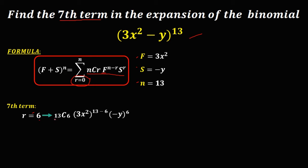Simplify using a calculator. 13 choose 6 gives us the coefficient. Distribute the exponent 7 to 3 and x squared, so this becomes 3 to the power of 7 and x squared times 7, giving x to the power of 14. For negative y to the power of 6 — take note: if a negative number is raised to an even exponent, the answer is positive. Since 6 is even, this becomes positive y to the power of 6.